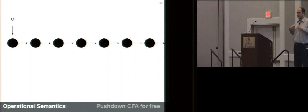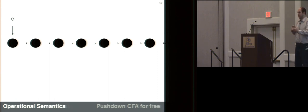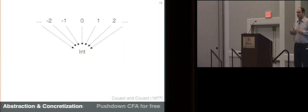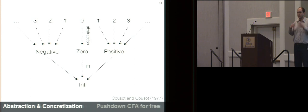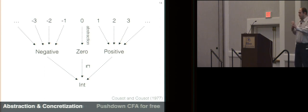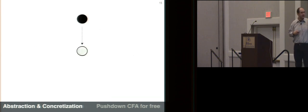From here, we add approximation to gain computability and information about our program. For program values — say exact integers in concrete evaluation — we might replace these with an abstract value 'int' standing in for all possible integers. We can add nuance: sign analysis, interval analysis, modeling an upper bound on bits required. With abstraction and concretization relationships for the components of our machine, we can compose them to get such a relationship for concrete states and their abstract representatives. Given a precise state, we can approximate it to obtain a most precise abstract representative, though this abstract state likely stands in for multiple or infinitely many concrete states.